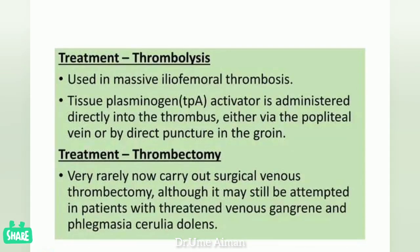Thrombolysis is used in massive iliofemoral thrombosis. Tissue plasminogen activator is administered directly into the thrombus via the popliteal vein or by direct puncture in the groin. Thrombectomy is rarely carried out; however, surgical venous thrombectomy may still be attempted in patients with threatened venous gangrene and phlegmasia cerulea dolens.